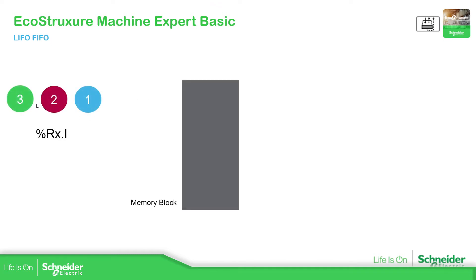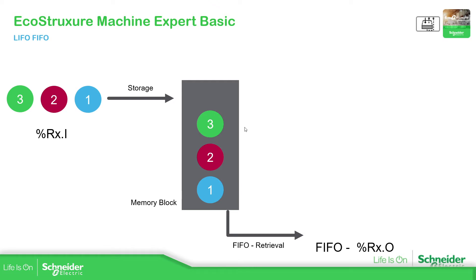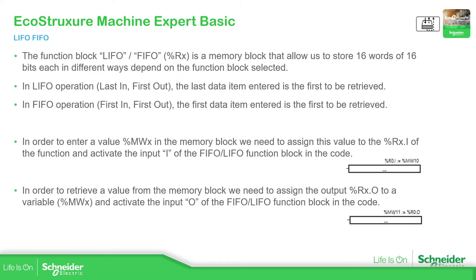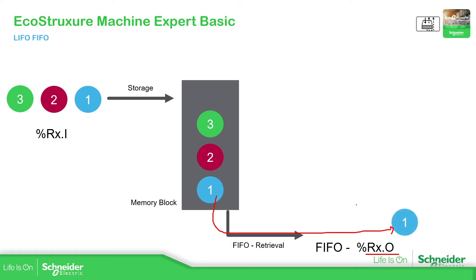Imagine that on this percentage r variable we activate the storage — it will enter into the memory in this position. Now, if we have defined this instance as FIFO, every time I retrieve, it will move this value over here to this percentage r x dot zero, which links it to the output we defined.